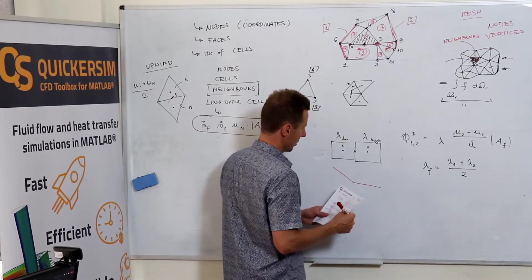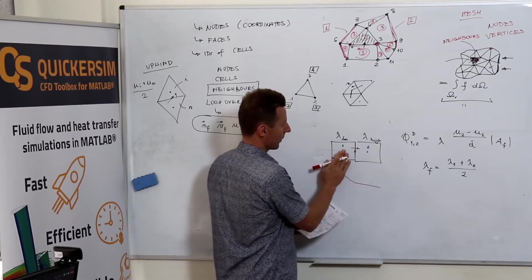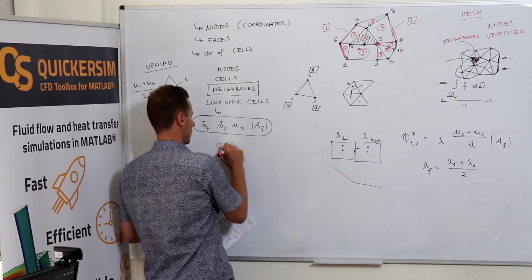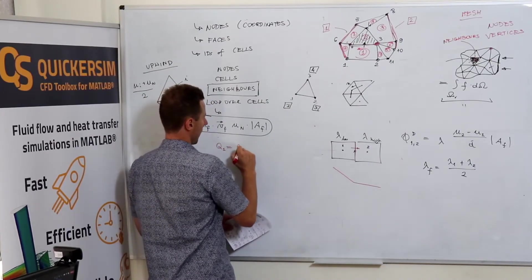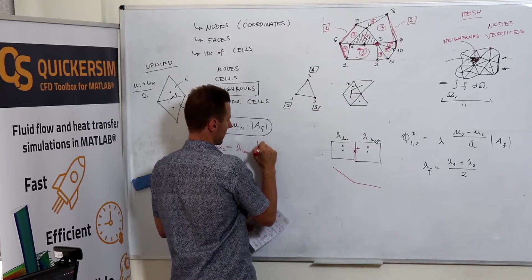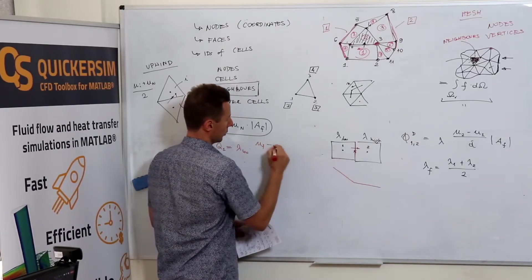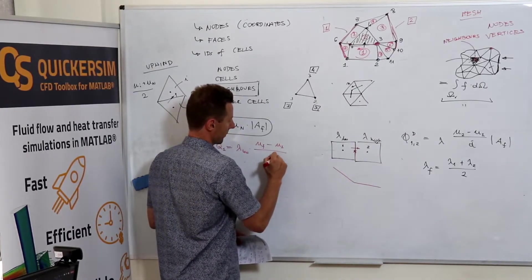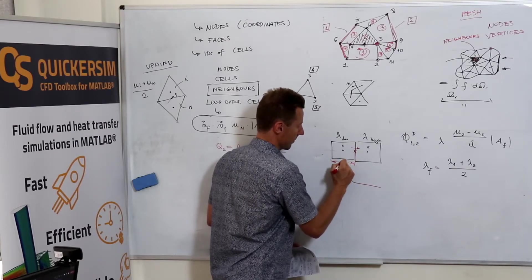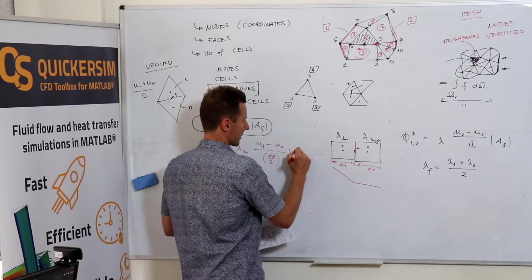So how would you compute the heat flux for that boundary, or for that interface, looking from the perspective of the first cell or from the first material? You would say that Q1 is equal to lambda low times temperature at the interface, or let it be U, at the face minus U1 at my centroid divided by delta x half, meaning that delta x is the size of the cell. Right? Well, okay, times A.